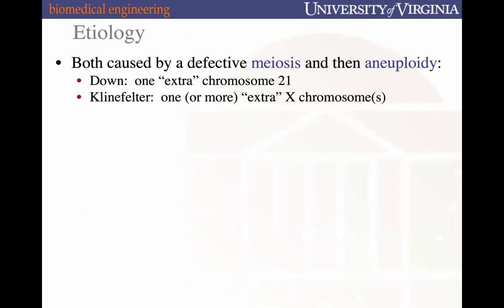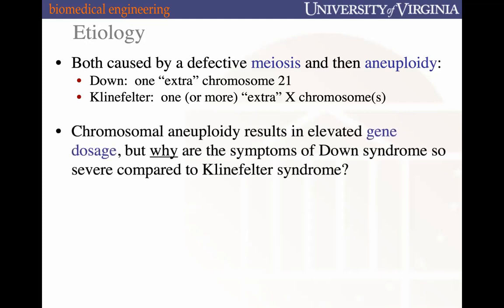Both syndromes share the same etiology — defective meiosis. Meiosis is cell division specific to germline cells in sex glands. A dysfunction in chromosomal segregation during meiosis leads to aneuploidy — an incorrect number of chromosomes in the resulting germ cells. In Down syndrome, there is an extra copy of chromosome 21 (hence the name trisomy 21). In Klinefelter syndrome, there is an extra X chromosome.